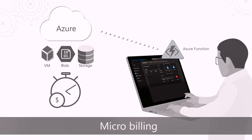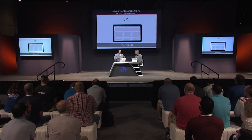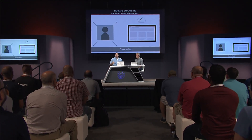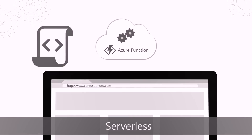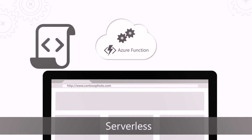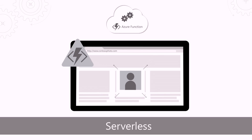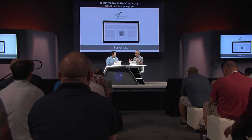For example, let's say you have a website where people are uploading pictures and you need to resize those images. Whenever someone uploads a picture, you want to automatically resize it — so the upload is the event. This is where Azure Functions come in: it contains and runs that code and has a series of bindings that listen to that event, so whenever a picture gets uploaded it will automatically trigger and resize the image.